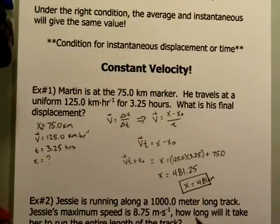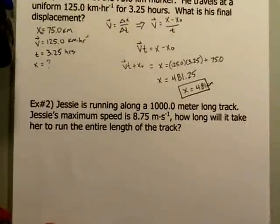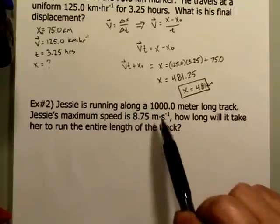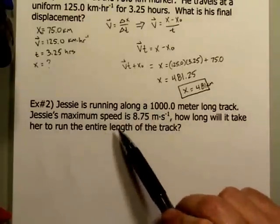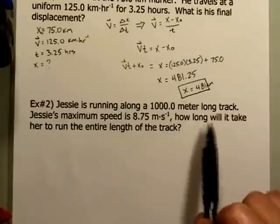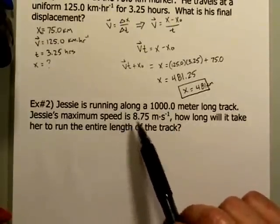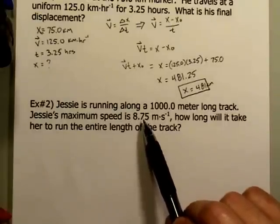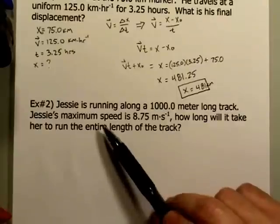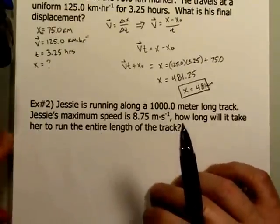Let's take a look at a second example. This is a situation in which we used the fact that the velocity was constant to calculate the final displacement of an object. But that's not the only thing we might want to calculate. In the second example, Jesse is running a 1,000-meter track. His maximum speed is 8.75 meters per second. How long will it take her to run the entire length of the track? It doesn't actually say this is a constant speed, but it is implied in the problem that her speed is not changing.